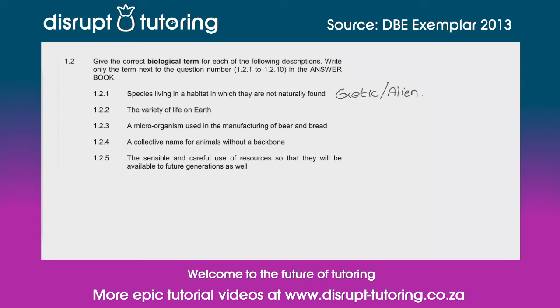1.2.2 — the variety of life on earth. Everything on earth that is alive is known as biodiversity.